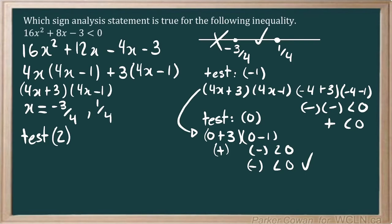And again, plugging that into our factors there. We'll have 4 times 2 plus 3, and 4 times 2 minus 1. And so this is going to be a positive and a positive. And when we compare that to 0, again, it's the same situation.